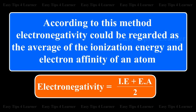According to this method, electronegativity could be regarded as the average of the ionization energy and electron affinity of an atom. Electronegativity is equal to ionization energy plus electron affinity, the whole divided by 2.